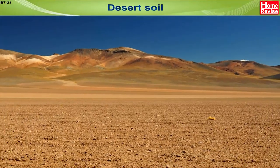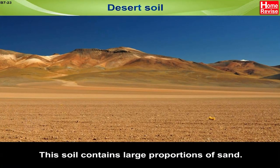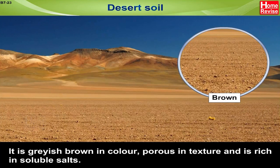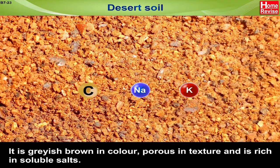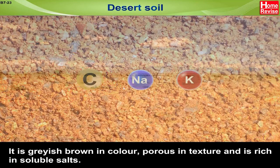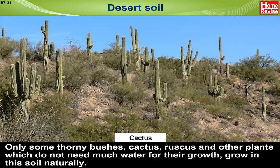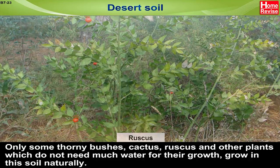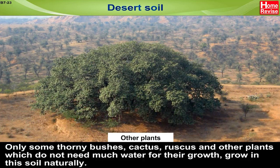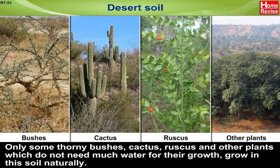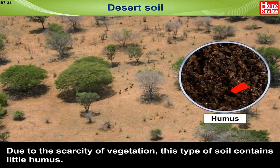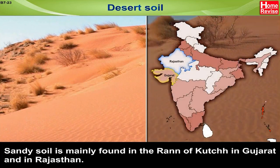Desert Soil: This soil contains large proportions of sand. It is greyish-brown in colour, porous in texture, and is rich in soluble salts. It does not have good water-holding capacity, but it can become fertile when watered. Only some thorny bushes, cactus, ruscus, and other plants that do not need much water grow in it naturally. Due to the scarcity of vegetation, this soil contains little humus. Sandy desert soil is mainly found in the Rann of Kutch in Gujarat and in Rajasthan.